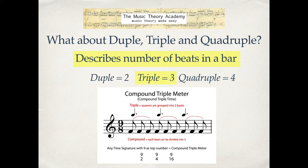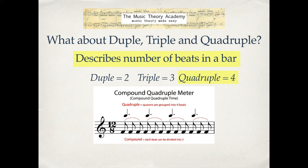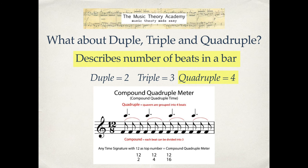Finally, compound quadruple: here's twelve-eight, twelve quavers in every bar. It's quadruple because the quavers are grouped into four beats — four beats in that bar when conducting. It's compound because each beat can be divided into three. So it's compound quadruple meter or compound quadruple time. Any time signature with twelve as the top number is going to be compound quadruple meter.